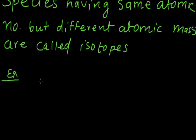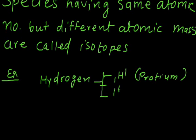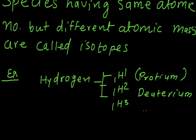For example, hydrogen has three isotopes. The first one is 1H1, it is called Protium. The second one is 1H2, that is called Deuterium. And the third one is 1H3, that is called Tritium.